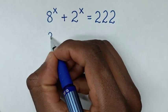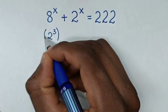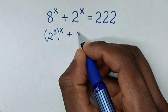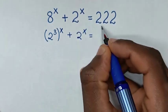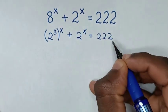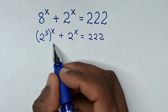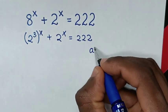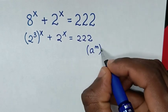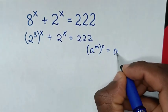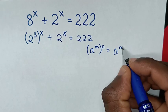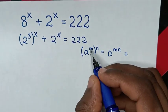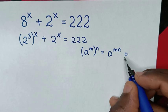Now, 8 is the same as 2 to the power 3, so we have (2^3)^x plus 2^x is equal to 222. In the next step, we apply the exponential rule: a^m raised to the power n equals a^(mn), which is the same as a^n raised to the power m.